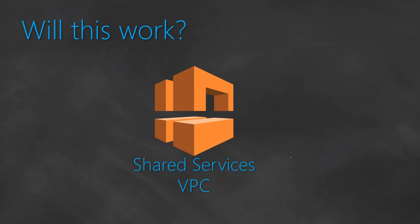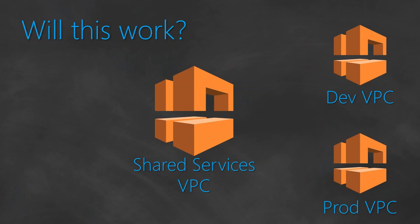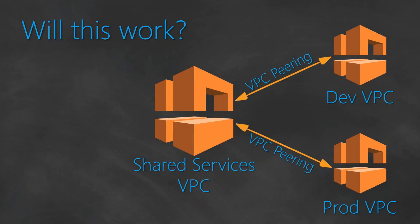Consider this scenario: there is a shared services VPC in your AWS account, and then you also have another VPC called your dev VPC or test VPC, and then another one — let's call that the prod VPC. All three VPCs are connected to each other through VPC peering. Dev is connected to shared services and prod is also connected to shared services, but dev and prod are not connected to each other because we don't want that to happen. That is how the typical setup was expected by my client.